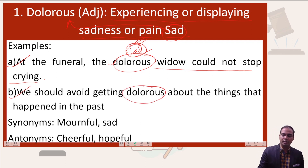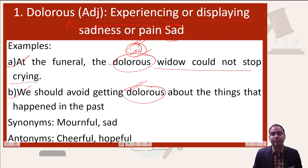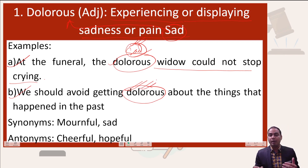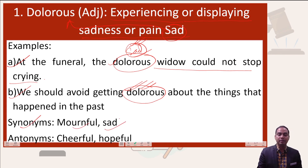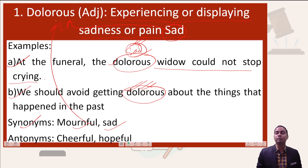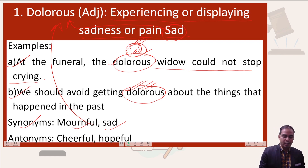Sometimes we have a lot of trouble with the past, but we should avoid getting sad about things that happened in the past — be watchful instead. Synonyms of dolorous are mournful and sad, which can be interchangeably used with dolorous. Antonyms are cheerful and hopeful.